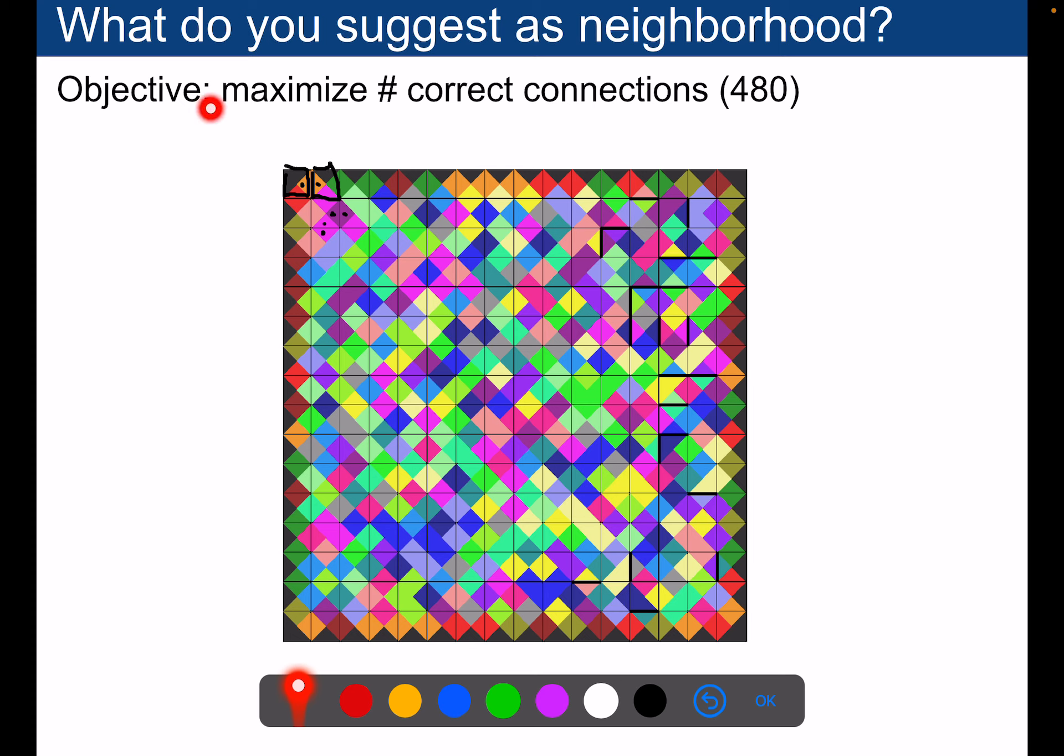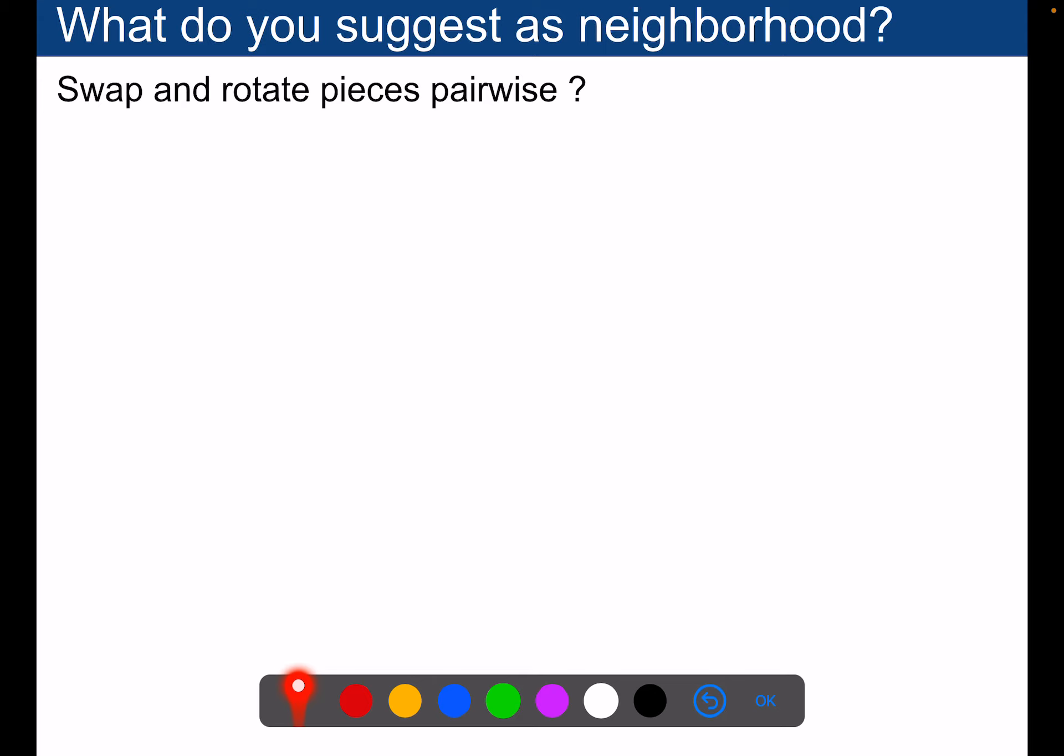The goal is to maximize the number of correct connections, the correct matching edges. So how to solve that problem with local search? One neighborhood that you could imagine is just to take two pieces and swap them on the board, and you could possibly rotate them.